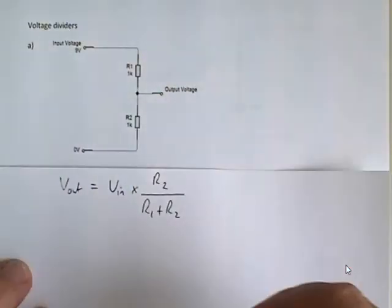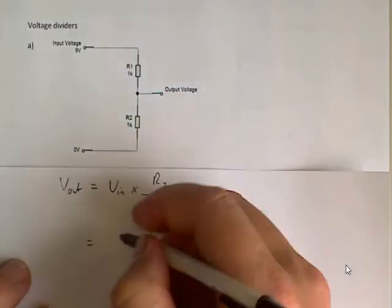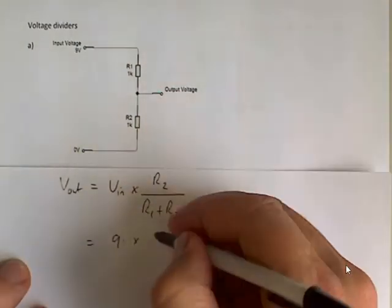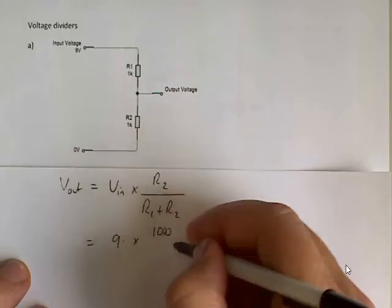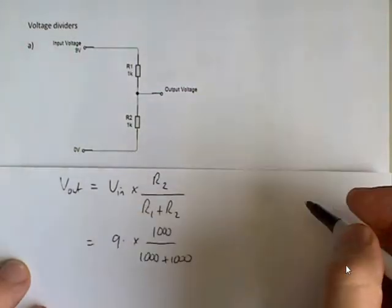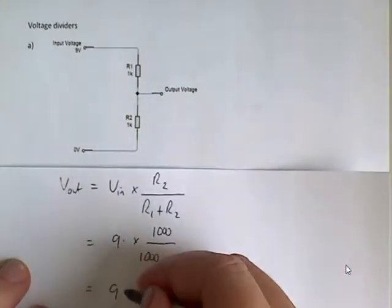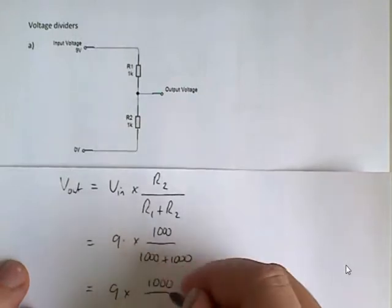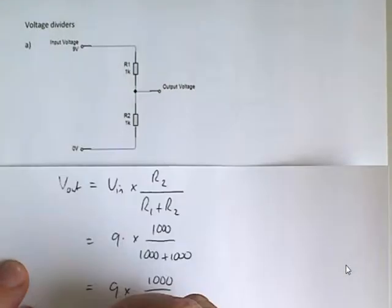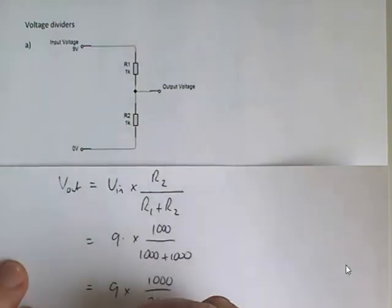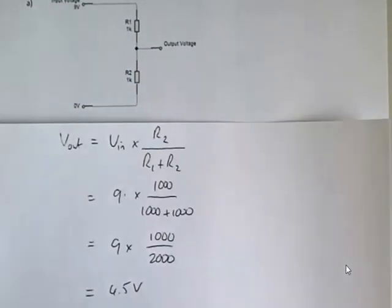So in this case we have 9 volts multiplied by 1,000 all divided by 1,000 plus 1,000, which is equal to 9 times 1,000 over 2,000, which is 1,000 over 2,000 is a half, half of 9 is 4.5, so 4.5 volts.